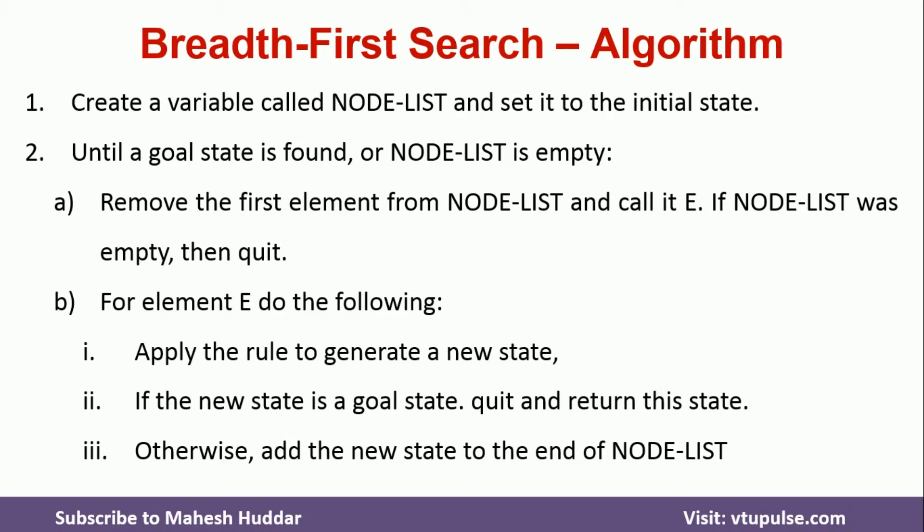First, we start with the initial node A and put it into the node list. Initially, the node list contains only the initial node A. We then remove A from the node list and find the successors of A. The successors of A are B and C, so we put B and C into the node list.